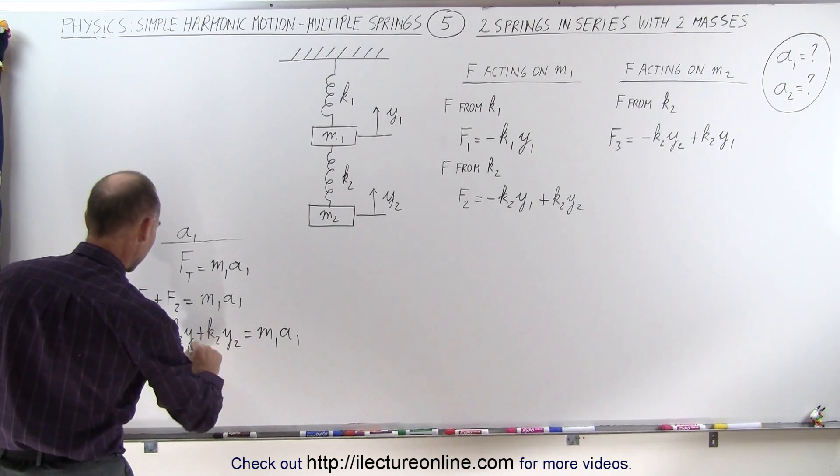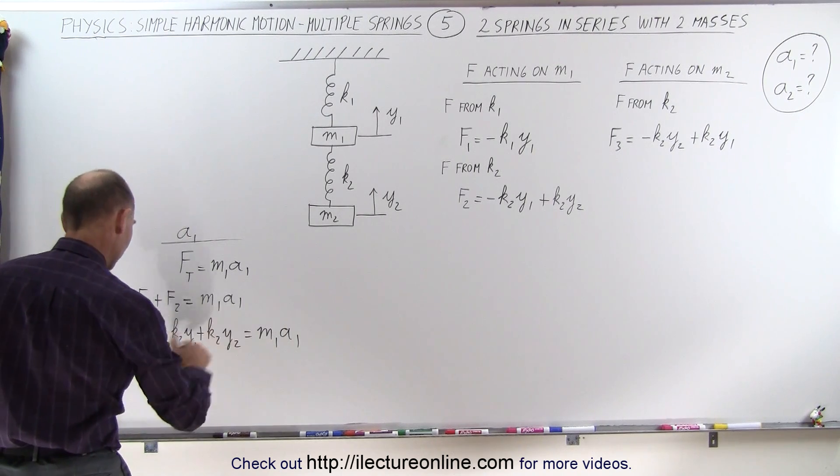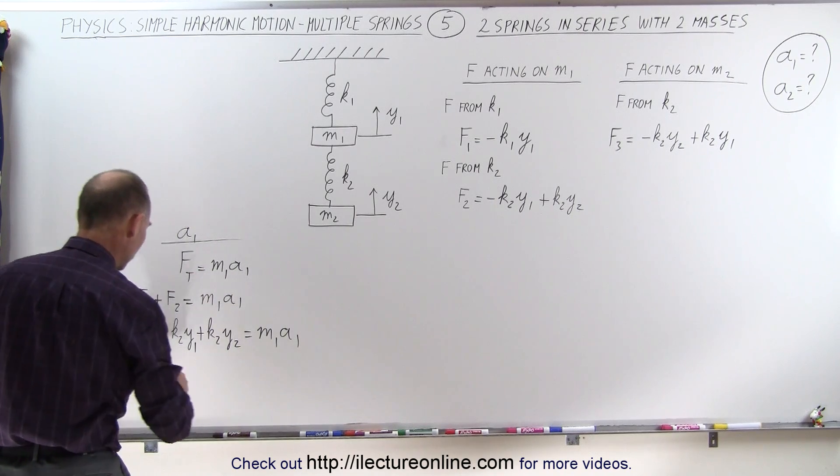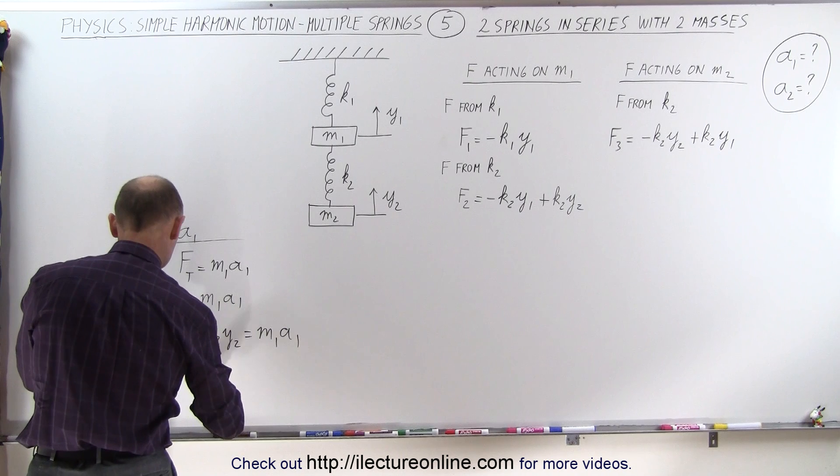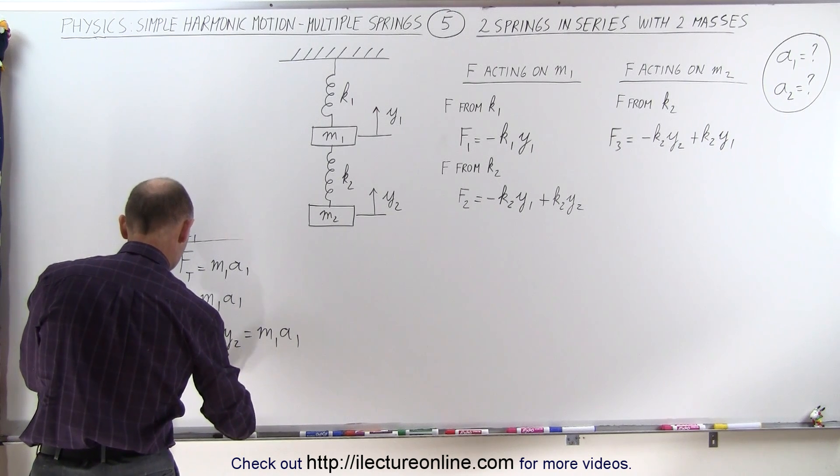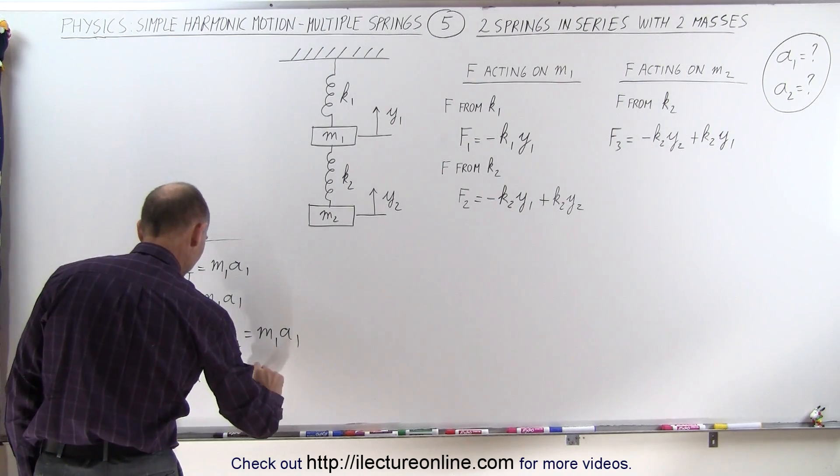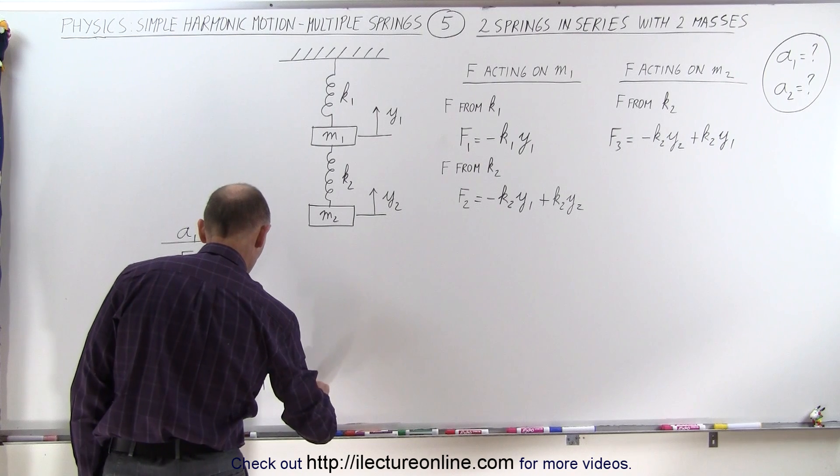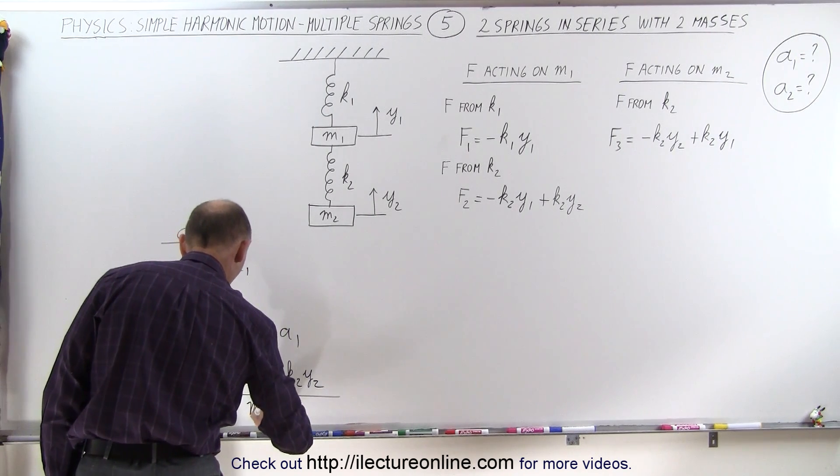And the two forces together is minus k1 y1 and minus k2 y1 and plus k2 y2 is equal to m1 a1. And so finally, I can maybe factor out some things here. So this should be y1, right? Yeah, y1. Okay. So factor out a y1, putting a negative in front of that.